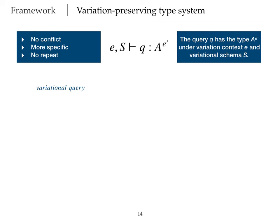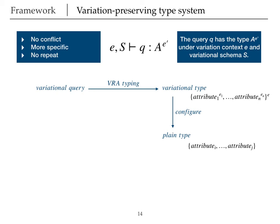What this property says is that given a variational query, if I get the type of this variation under the VRA typing system, I will get a variational type. This type looks something like this. Now, if I configure this type, and remember, we can configure anything that is variational to a plain non-variational. If I configure this type, I will get a plain type that will look something like this.